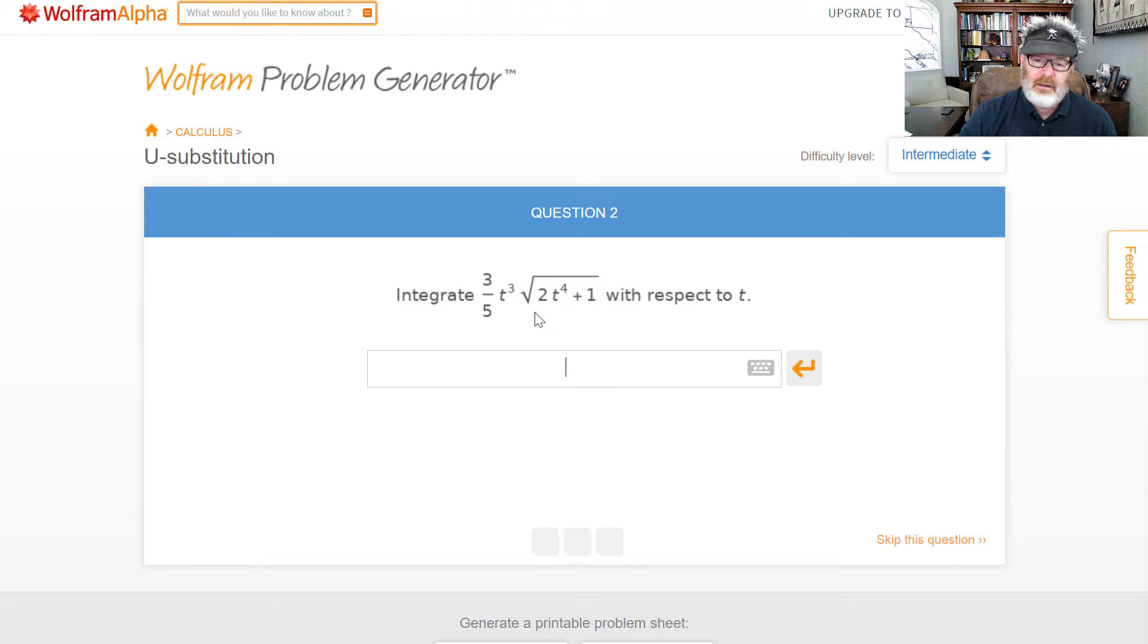All right, so we've got something square rooted, that's to the one half power. So we're going to want that to the three halves power. Let's just do that first: two t to the fourth plus one to the power three halves. And again, I'm assuming your substitution is going to work, so that's why we're able to do these so quickly. So now when I take the derivative, I'll get eight t cubed. There's the t cubed, so I get an eight, and then times three halves will be twelve. So I need to divide by twelve and multiply by three fifths. So that's like three over sixty, or one over twenty I believe.